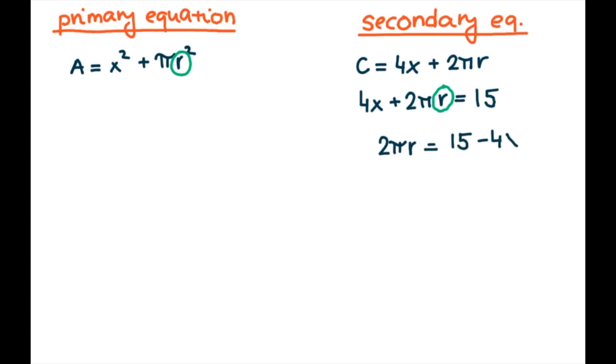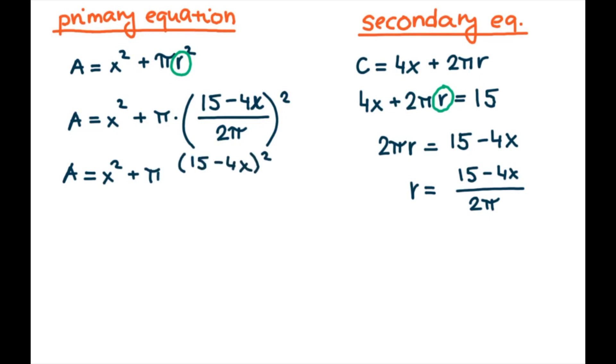Also, we see that r is present in both equations. So we will solve for r in one equation and we will plug in to a primary equation in order to get one variable. So we just plug in and be careful to plug in correctly. So it's 15 minus 4x over 2π and that all is squared. So we simplify a little bit to make it easier and we see that we can cancel π. So here we also simplify it a little bit because we will be differentiating this equation later. So here, this is our simplified version of the primary equation representing area.